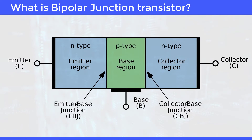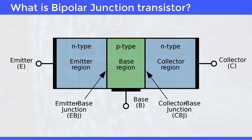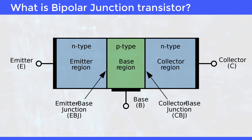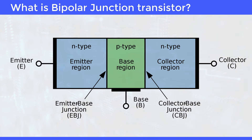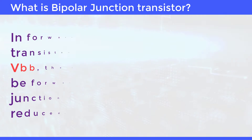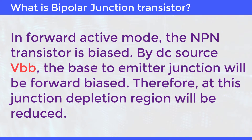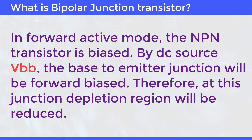In the NPN Transistor, the middle region — that is, the base — is of P-type, and the two outer regions — that is, emitter and collector — are of N-type. In forward active mode, the NPN Transistor is biased. By DC source VBB, the base-emitter junction will be forward biased.